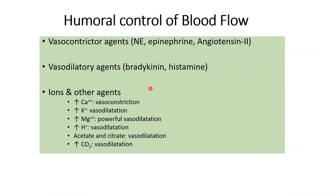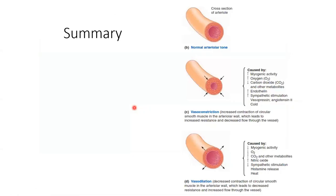On the hormonal side, there are vasoconstrictor and vasodilator agents, various lines and agents causing vasoconstriction and vasodilation. Reading the relevant section of the textbook will provide a full view of this list. A summary diagram covers what we've discussed regarding vasoconstriction and vasodilation.